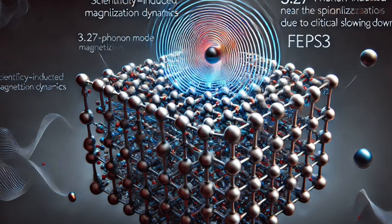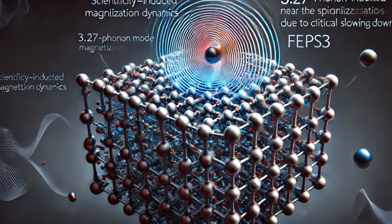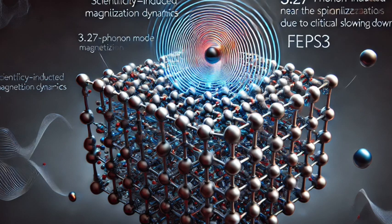Precisely. And those fluctuations in the magnetic interactions can be influenced by the terahertz light. Remember how we talked about that special 3.27 terahertz phonon? Right, the one that acts like a tiny antenna for the terahertz light. Well, when the terahertz light hits the material, it excites this particular phonon mode.